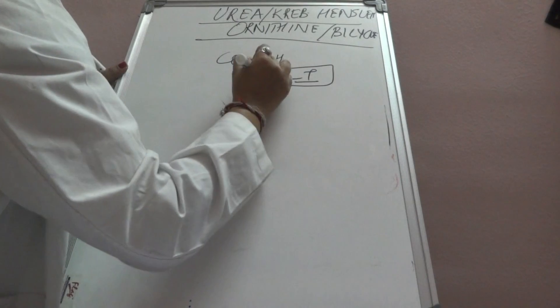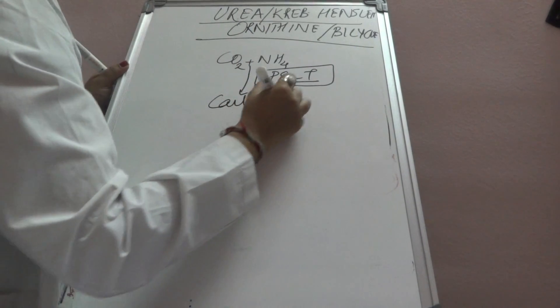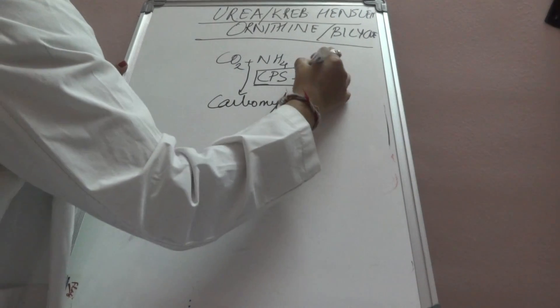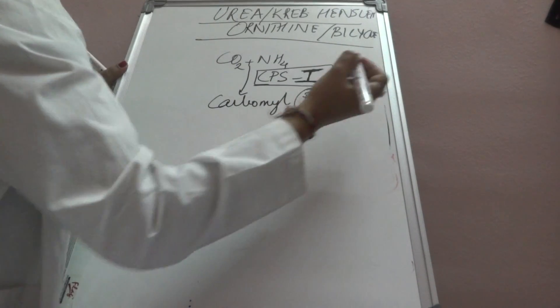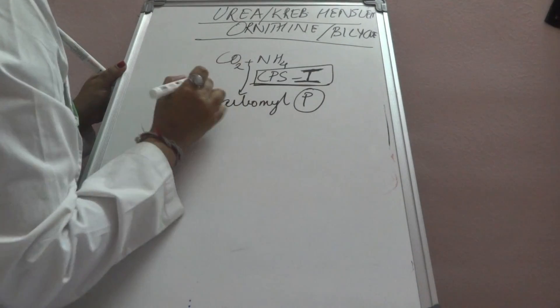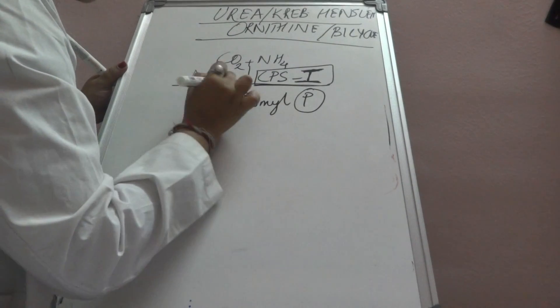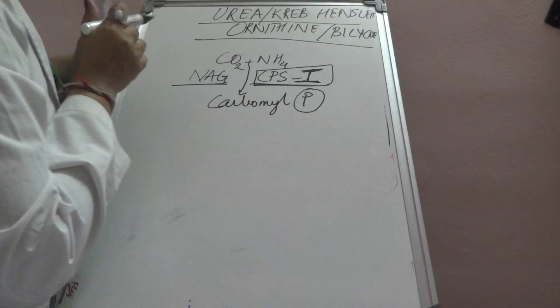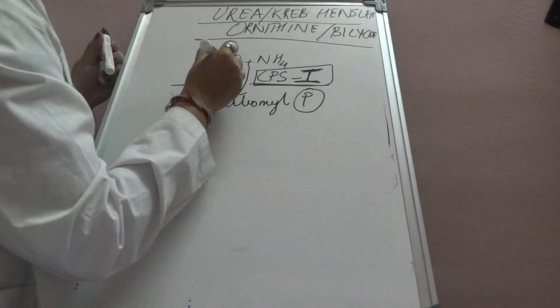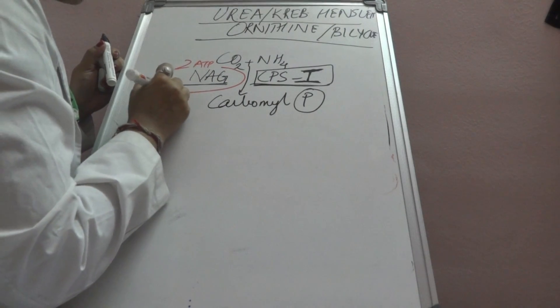The enzyme is carbamoyl phosphate synthase-1, which forms carbamoyl phosphate. The 'one' is very important because 'two' is used in pyrimidine synthesis. Carbamoyl phosphate synthase-1 works in the presence of activator N-acetylglutamate. This process utilizes two ATP to form two ADP.